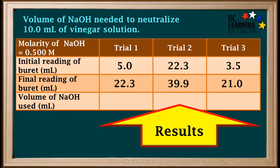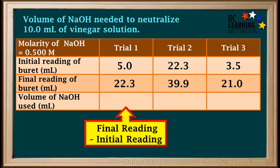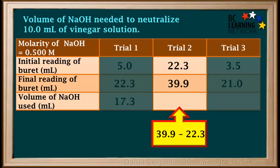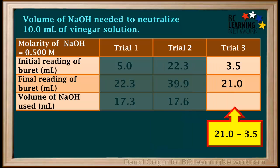Now we'll go back to the results of all three trials. The volume of NaOH used for each trial is calculated by subtracting the initial reading from the final reading. In Trial 1, this is 22.3 milliliters minus 5 milliliters, which is 17.3 milliliters. In Trial 2, the volume of NaOH used is 39.9 milliliters minus 22.3 milliliters, which is 17.6 milliliters. And in Trial 3, the volume used is 21.0 milliliters minus 3.5 milliliters, which is 17.5 milliliters.